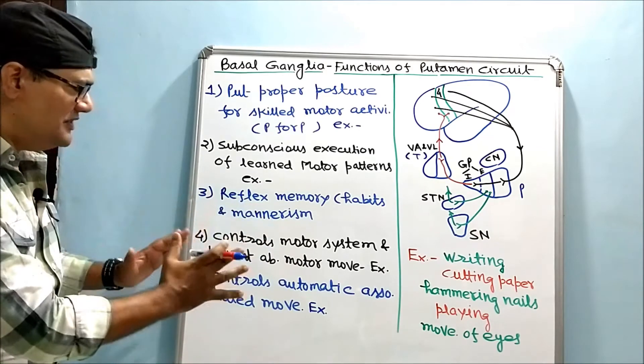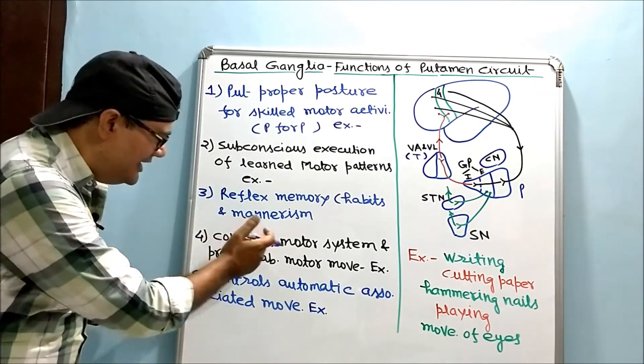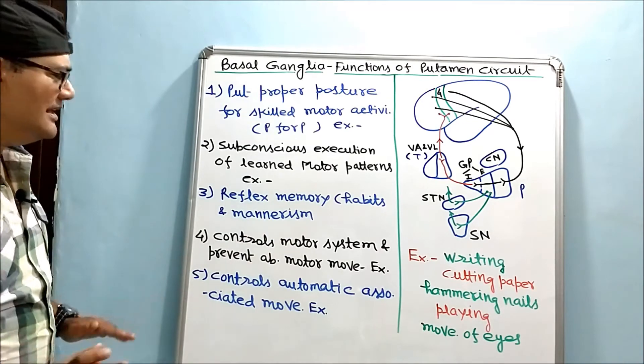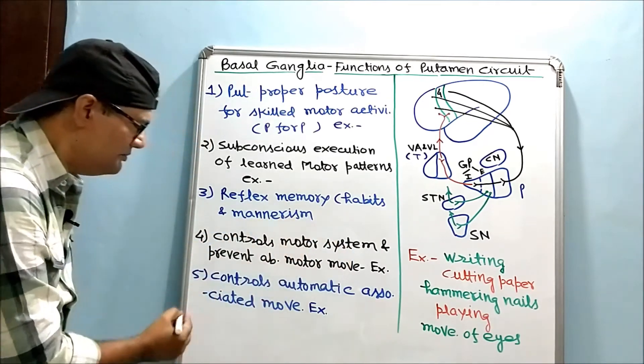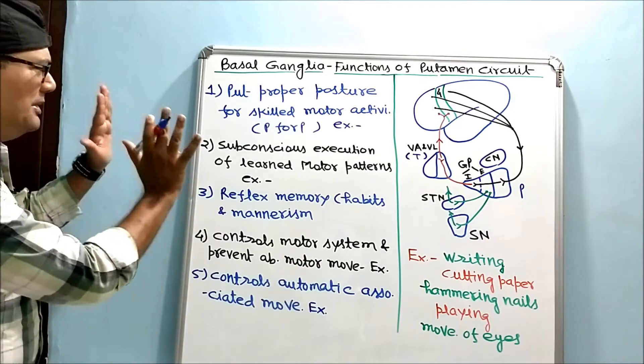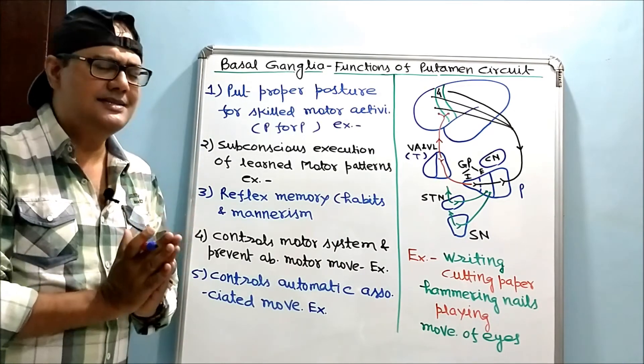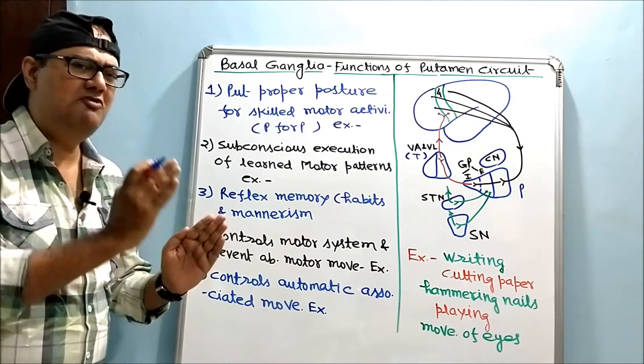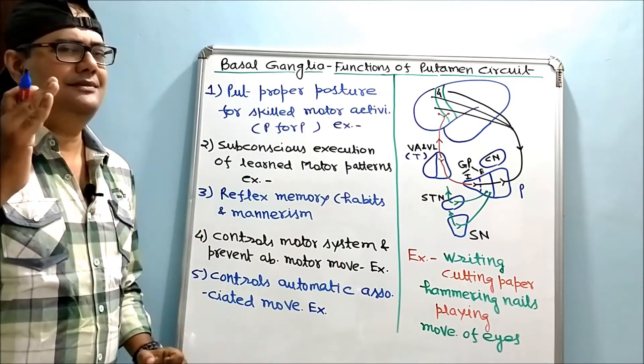Because of these clinical findings, we can conclude that basal ganglia has some role in controlling motor system and automatic associated movements. But the basic physiological function is: putamen circuit is for posture. P for P holds the key.